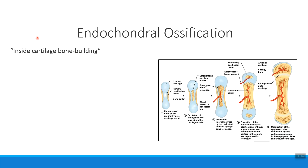Most of the bones in your body are built from a cartilage model made out of hyaline cartilage that we transition into bone tissue. The exception to that are the flat bones in our body — bones like the skull bones and the sternum. These kinds of bones are not made from a cartilage model; they're made from a membrane of connective tissue, in a process called intramembranous ossification.